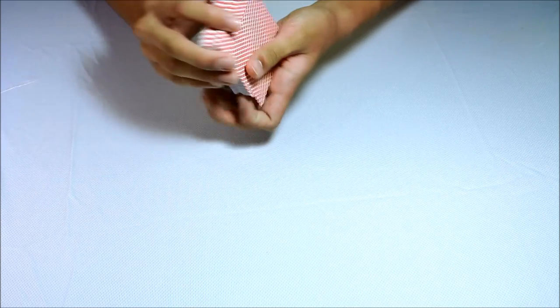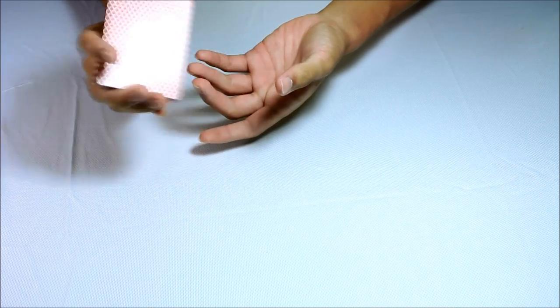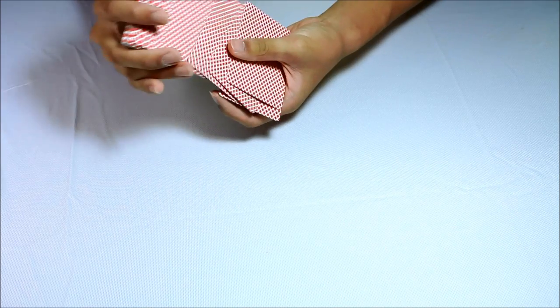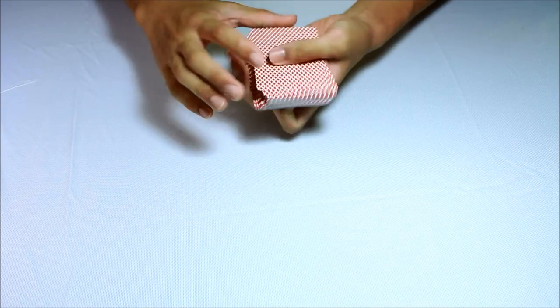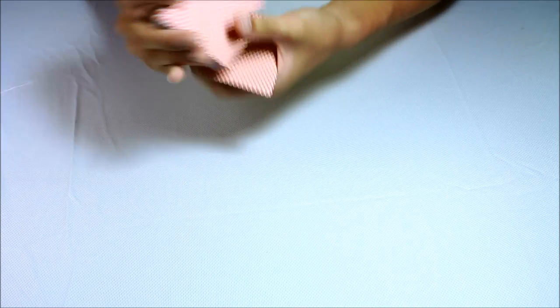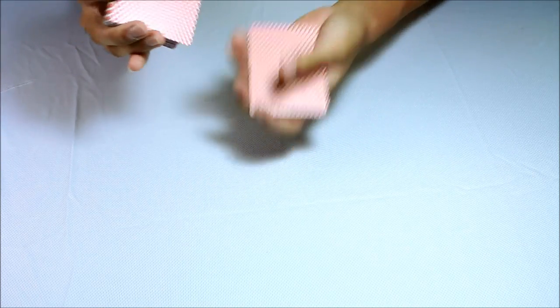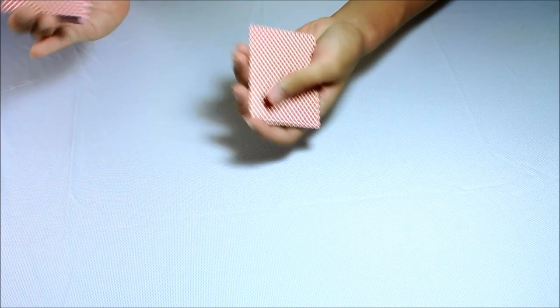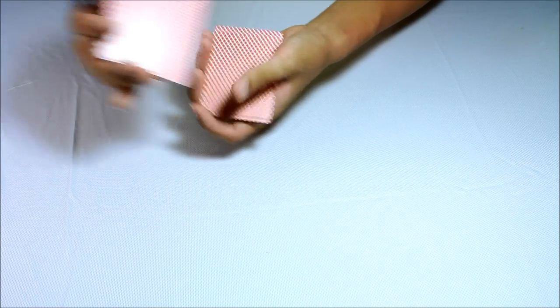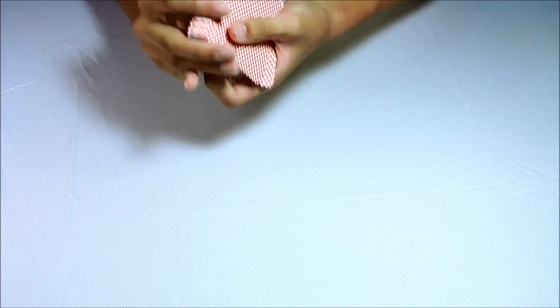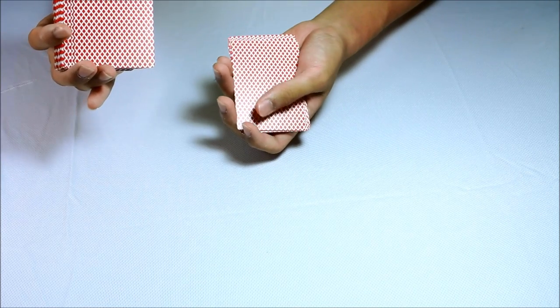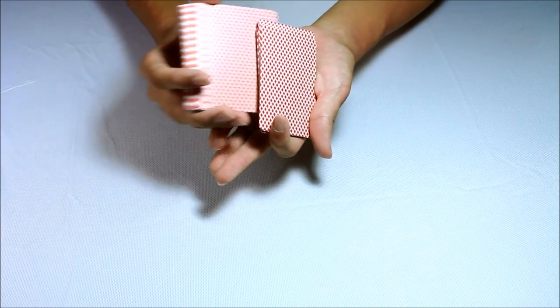Now, do an overhand shuffle like that, by pulling off single cards at one time. Just get 12 off, like 1, 2, 3, 4, these are the four aces, and 8 more to get 12, which is 5, 6, 7, 8, 9, 10, 11, 12, and then place the rest of the pack under it.